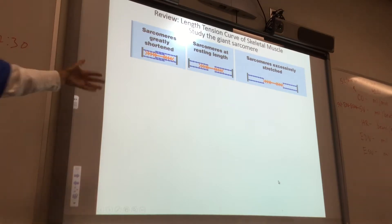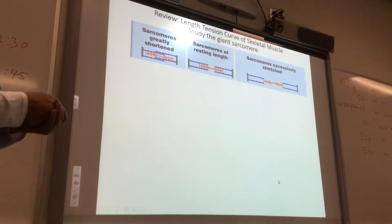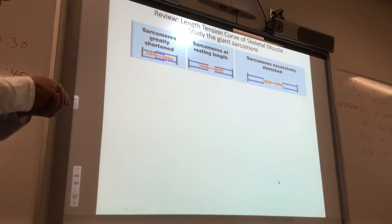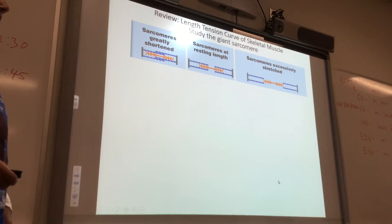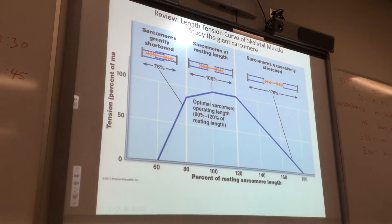What if your sarcomeres are too stretched out? Even though the myosin heads are cycling, they can't grab onto any myosin head binding sites on actin. So if you have this in mind, you can understand the length-tension curve.